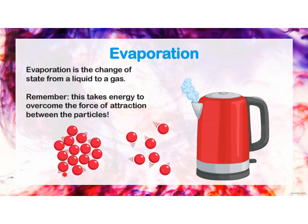Do you remember how particles behave in a liquid? Particles slide past one another. When these particles absorb energy, they move faster and farther apart. When they have enough energy, the liquid turns into gas, according to a process called evaporation. So evaporation is the change of state from liquid to gas. In order to evaporate, the liquid must have enough energy to overcome the force of attraction between the particles.